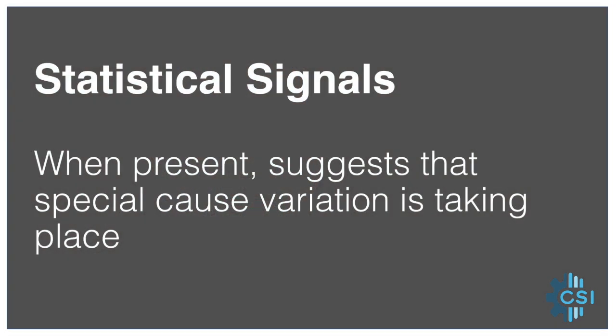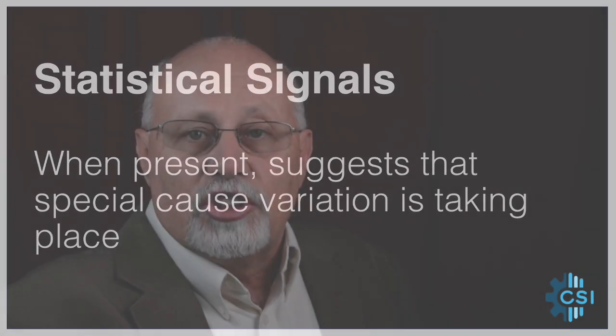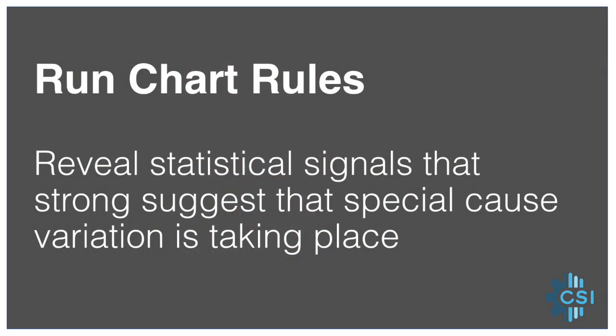These are also called statistical signals. These signals show that something has changed in the process to the point that they start showing up in the run chart, revealing special cause variation. When these signals are not showing up, it strongly suggests that the only variation we are seeing is from common causes. Fortunately, there are tools called run chart rules that help us tell the difference between common and special cause variation.